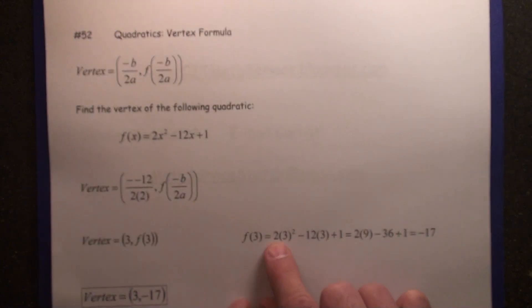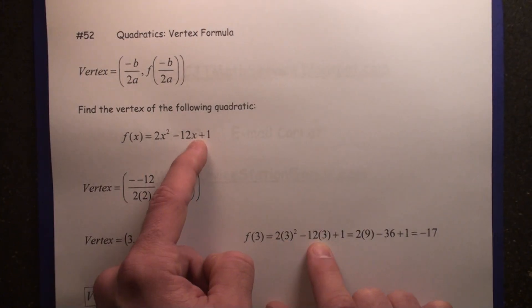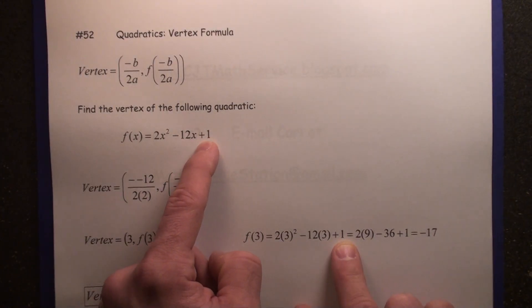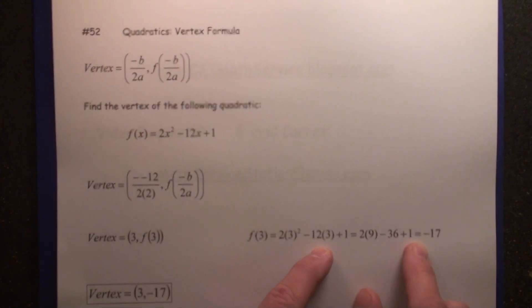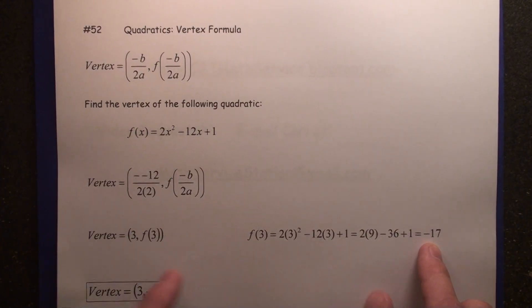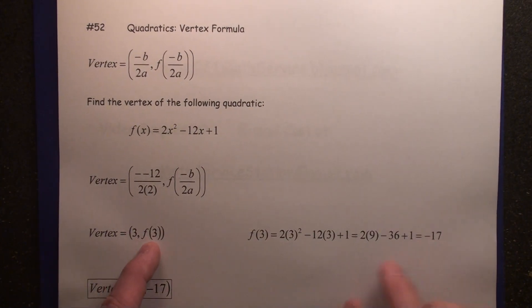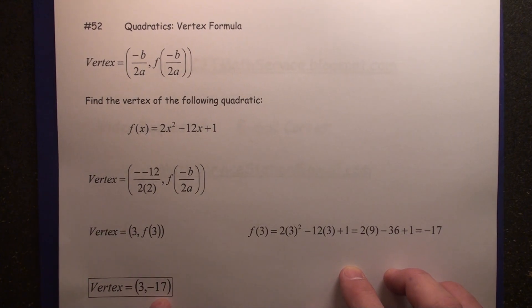Instead of 2 times x squared, it's 2 times 3 squared minus 12 times 3 plus 1. Therefore, you get 2 times 9 minus 36 plus 1 equals negative 17, because you've got 18 plus negative 36. Therefore, the vertex is 3 comma negative 17.